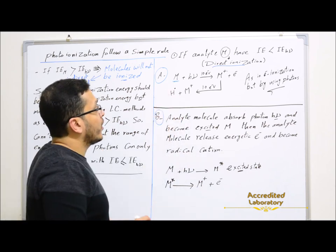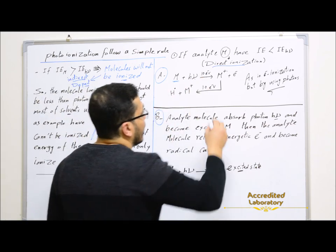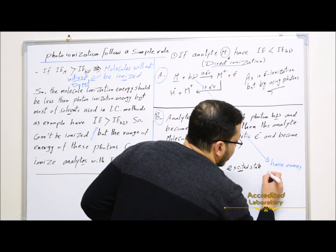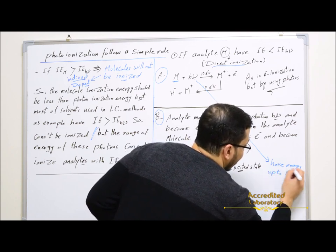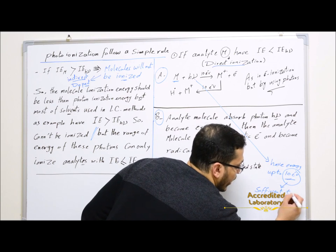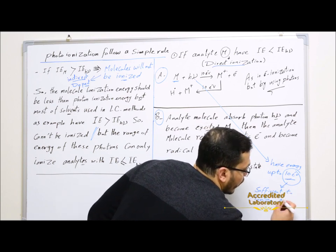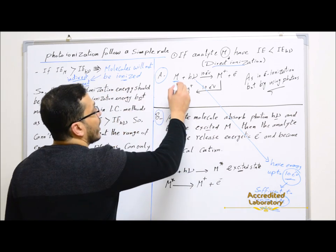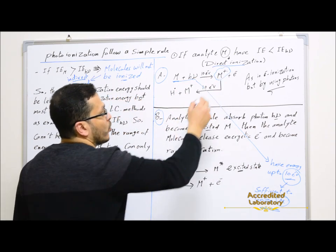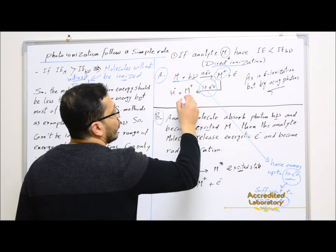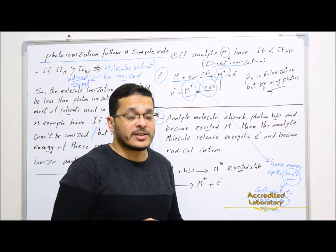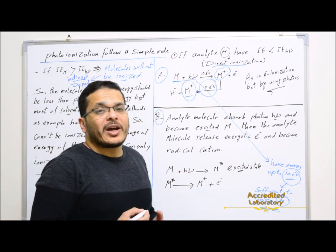Analyte molecules will react with the photons. These photons have energy up to 10 electron volts, which is sufficient to ionize most analyte molecules. These 10 electron volts will ionize the analyte molecule to form, at the beginning, a molecular ion. Then the molecular ion will react with another photon to form the analyte ion — similar to what happened in electron ionization, where analyte molecules are ionized by electrons with energy about 70 electron volts, with 10 electron volts used to convert the analyte molecule to a molecular ion.